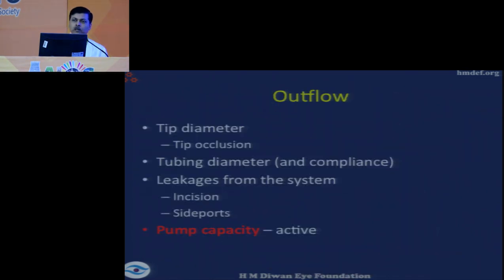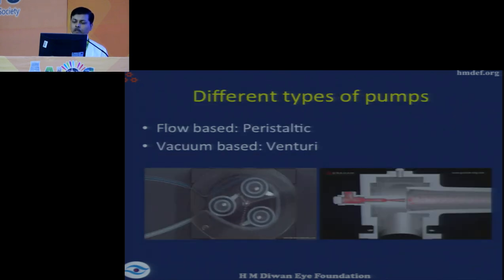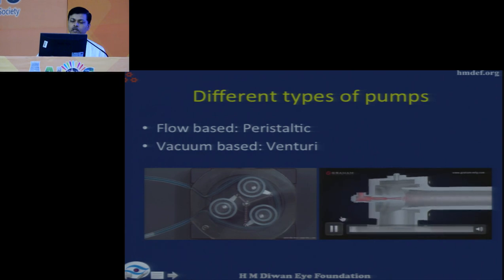Outflow includes aspiration and passive egress. Tip diameter and how much of the tip is occluded is the main parameter determining aspiration. Tubing diameter and compliance, leakages from the system, and most importantly the pump capacity — which is the active component — control aspiration. There are two pump systems: in the peristaltic system it is basically pinch-and-go, a pulsatile flow. In a venturi, it is a smooth laminar flow.